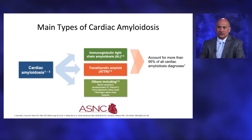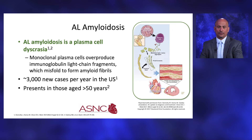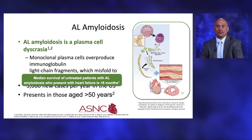There are two main types of cardiac amyloidosis: AL amyloidosis or light-chain amyloidosis, and transthyretin amyloid, abbreviated ATTR. Those two types account for greater than 95% of all cardiac amyloid diagnoses. AL amyloidosis is a plasma cell dyscrasia where monoclonal plasma cells overproduce immunoglobulin light-chain fragments which misfold to form amyloid fibrils. There are 3,000-plus new cases per year in the United States, generally presenting in those aged greater than 50. The median survival of untreated patients with AL amyloidosis who present with heart failure is less than six months.